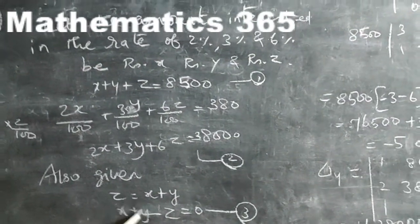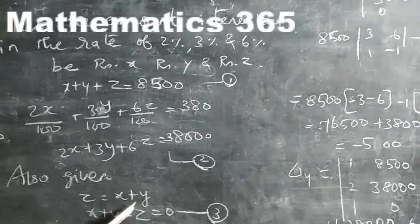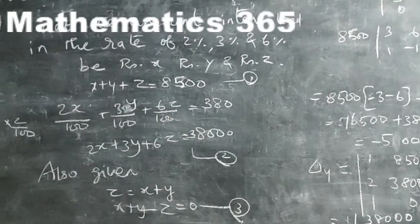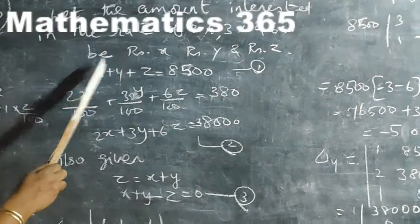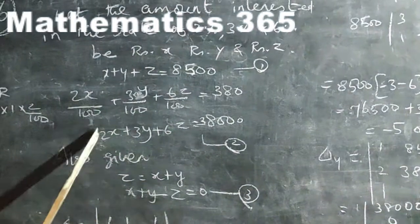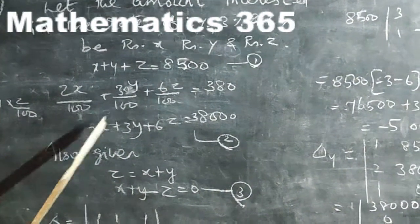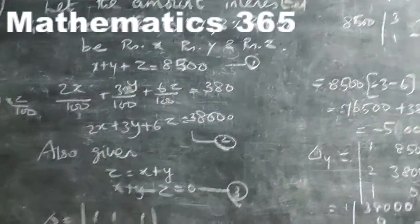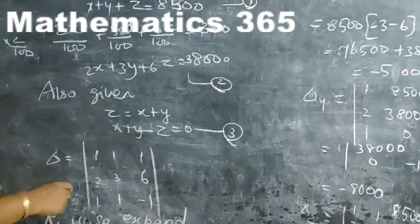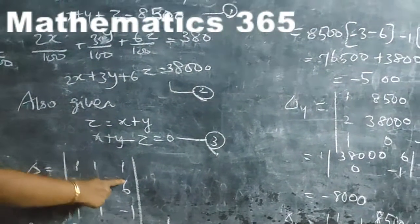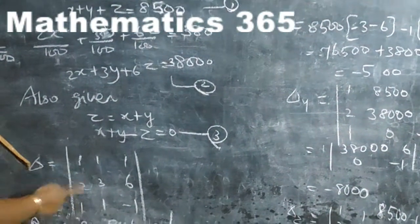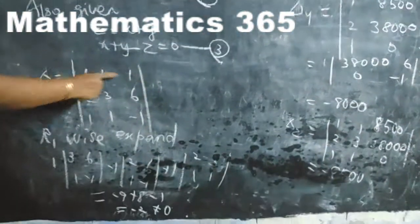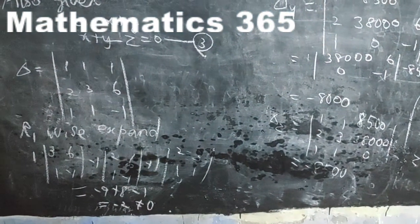So the coefficients for x, y, z are: first equation: 1, 1, 1; second equation: x coefficient 2, y coefficient 3, z coefficient 6. Now calculate Delta by expanding along R1. Expanding along C1 first gives answer minus 2. Expanding along R1 gives the value. Expand R1, R2, R3 or by column C1, C2, C3.